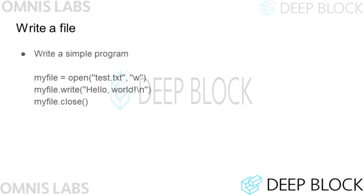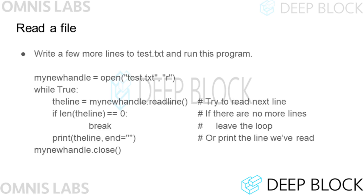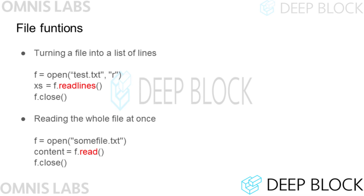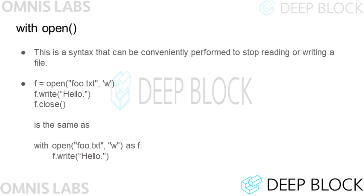Now, to warm up, let's create a Python program that creates files. Write the program displayed on the screen and run it. If you run the program, a test.txt file is created. Now add a few more lines of text to that file, then create and run the program below. Python also provides a function to read an entire file at once. The readlines function of the file object reads every line of the file, stores them as elements of a list, and returns the list. The read function reads the entire text of the file as a single string and returns it. The with keyword opens the file with the open function and keeps the file object open only while the code block below is executed, and automatically closes the file when the code block is finished.